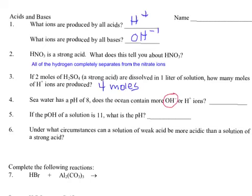Let's try the next one here. If the pOH of a solution is 11, what is the pH? Well, in this case, the answer is going to be three.